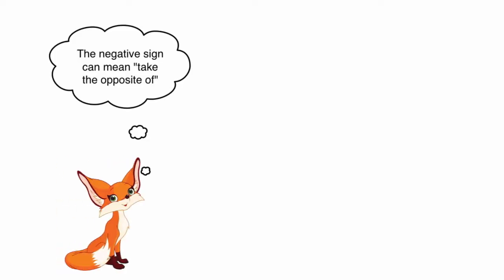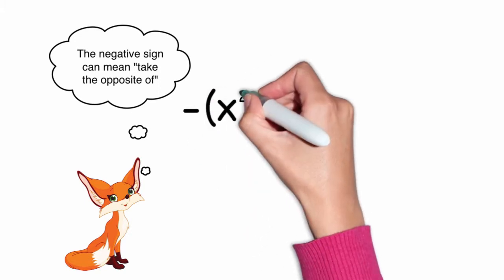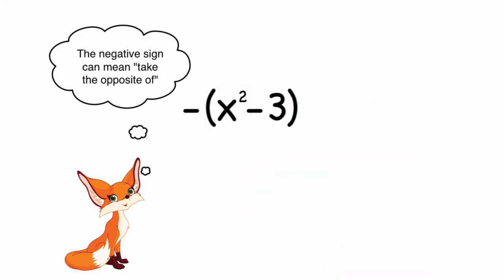We're going to be taking the negative or the opposite of x squared minus 3. We're going to take the opposite of everything in the parentheses. So I've got x squared minus 3.